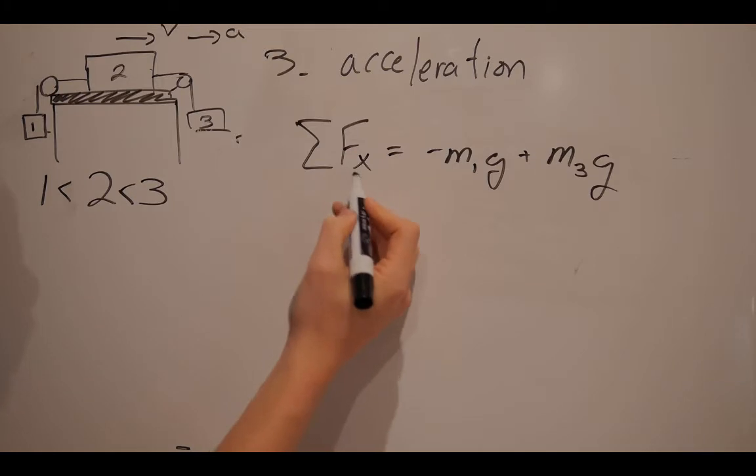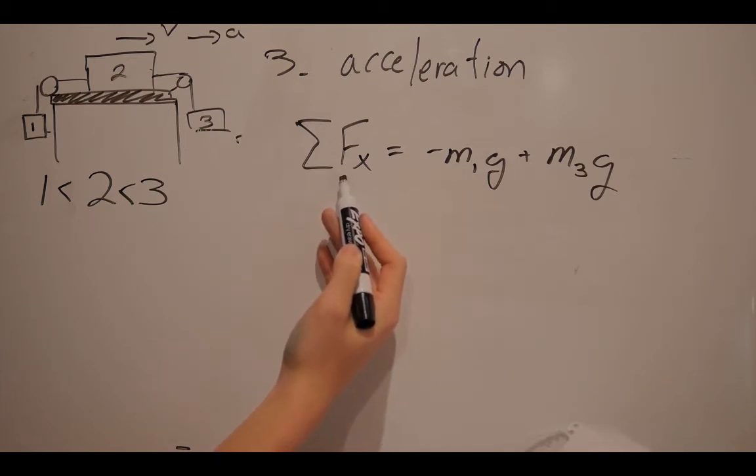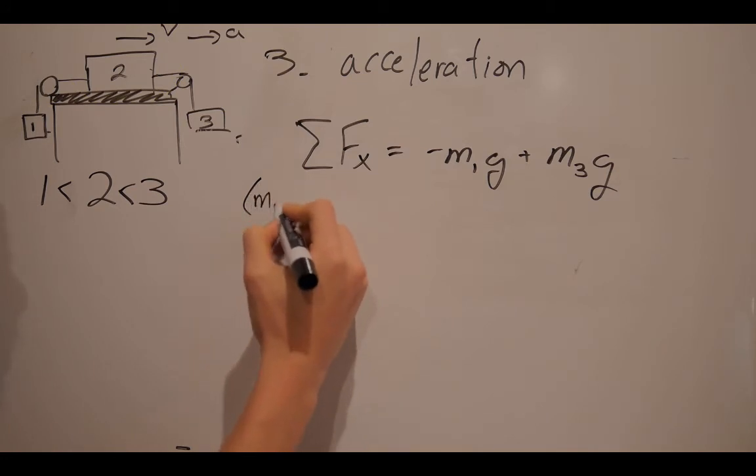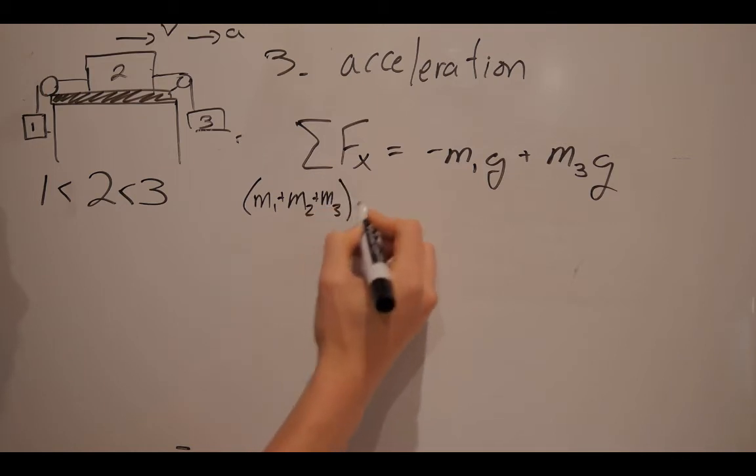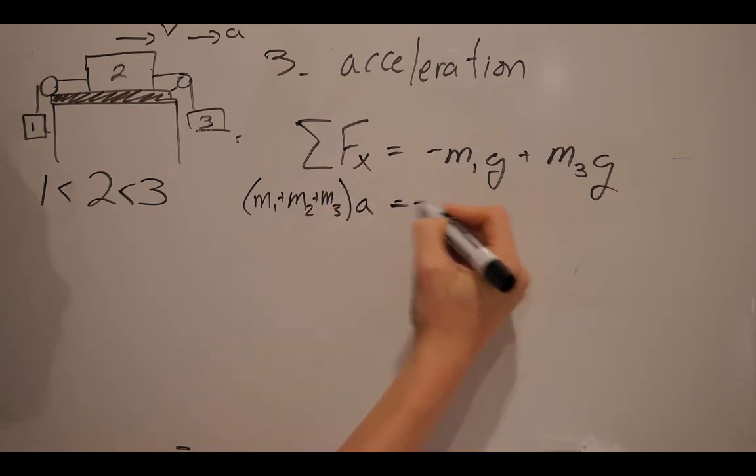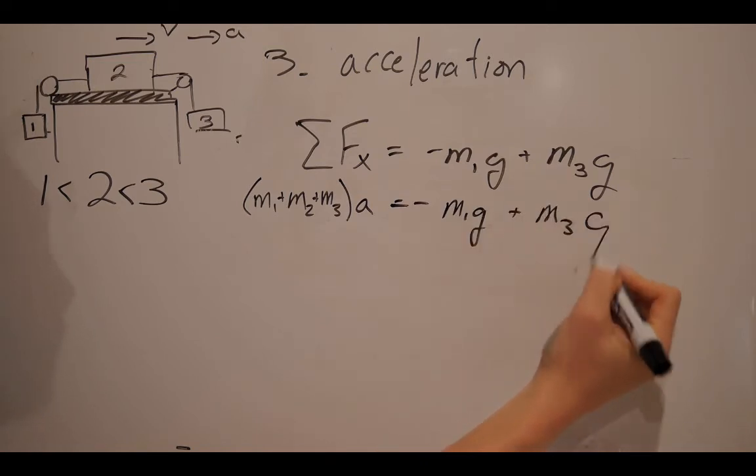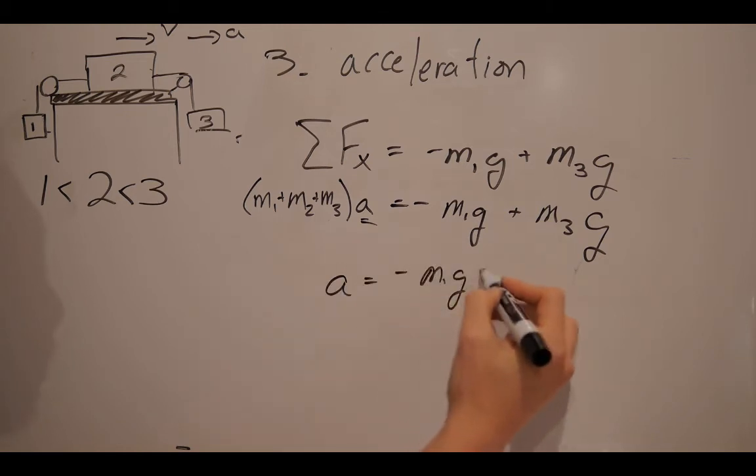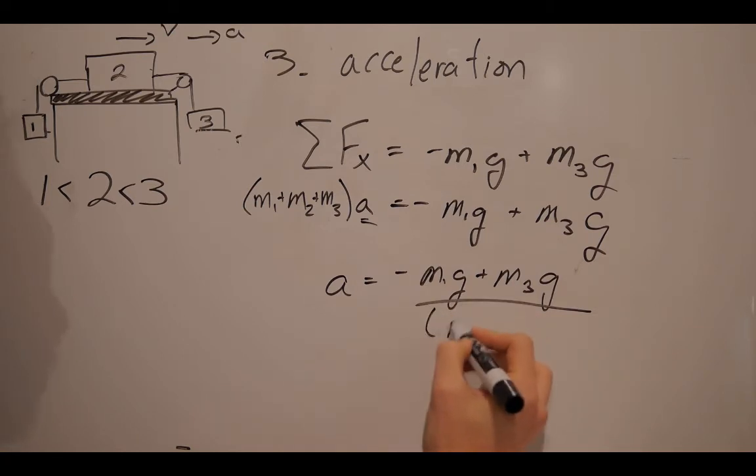So, from there, we know that the sum of all the forces in the x direction is equal to mass times acceleration, according to Newton's second law. So, we have to take a look at how many masses there are. And I see 1, 2, and 3. So, we need to include all of those masses. m1 plus m2 plus m3 times acceleration, according to Newton's second law, is equal to negative m1g plus m3g. Now, in order to find acceleration, we have this entire factor that we can divide by. So, we have acceleration is equal to negative m1g plus m3g, all over m1 plus m2 plus m3. And this is, of course, along the x-axis.